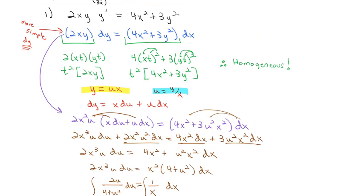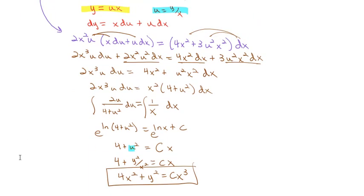These problems take more paper, but the process is straightforward. First, verify the equation is homogeneous by substituting xt and yt. If it is, pick the easier side — dy or dx — and make the substitution: either y equals ux or x equals uy. Calculate dy or dx, substitute in to get a separable equation, then substitute back to get the final solution.